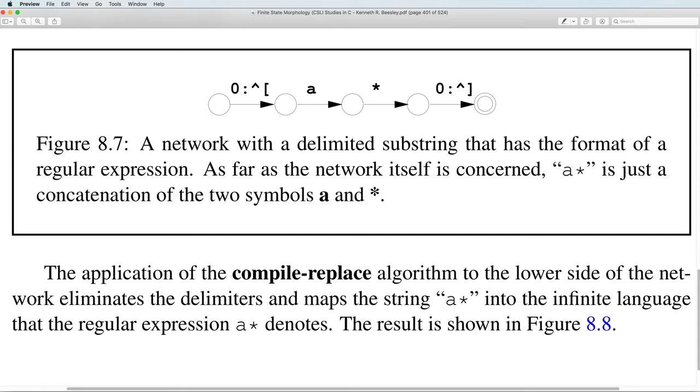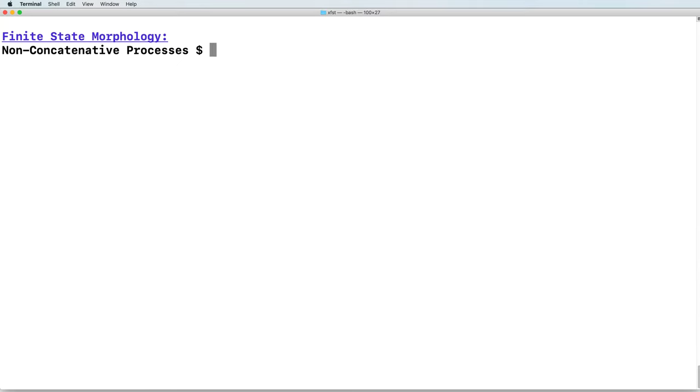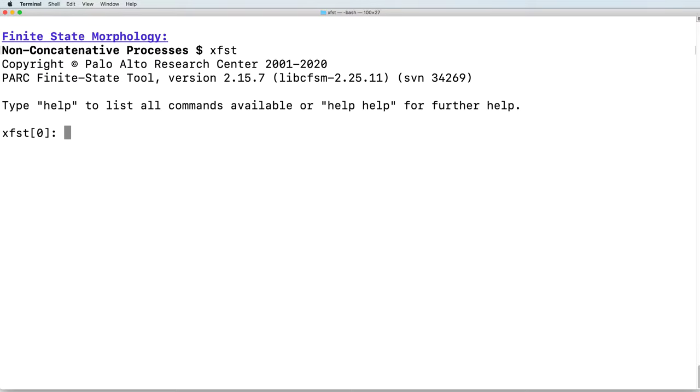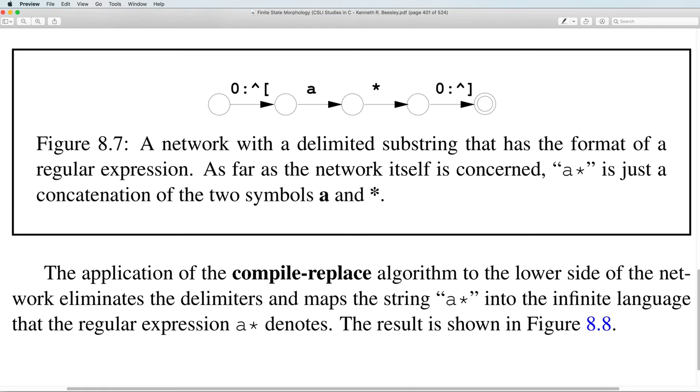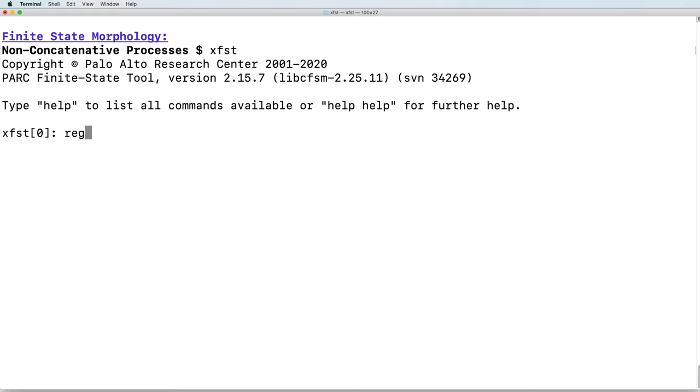Let's fire up XFST and see how this works in practice. We are now going to define a finite state machine that looks like this. We will define a regular expression consisting of an epsilon arc on the upper side, followed by the multi-character symbol that you see here.